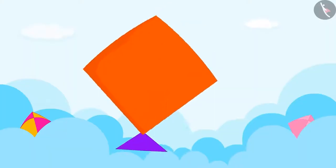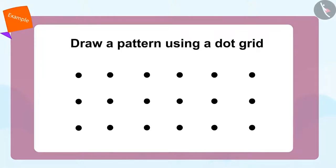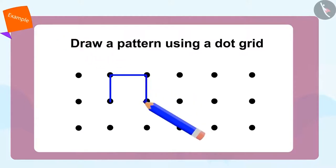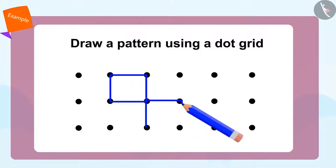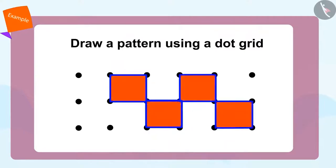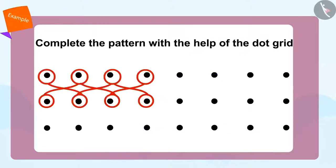Come children, let's take a look at how Meenu makes this pattern using the dot grid. First, we will create a square like this. Now we will create another square below using the corner of the first square like this. Now we can complete this pattern like this. Can you complete this beautiful pattern with the help of a dot grid?